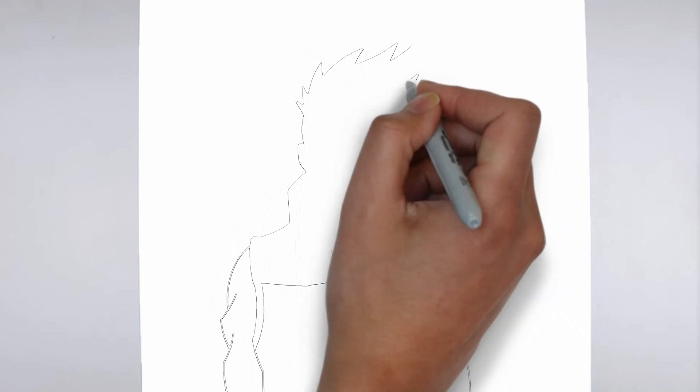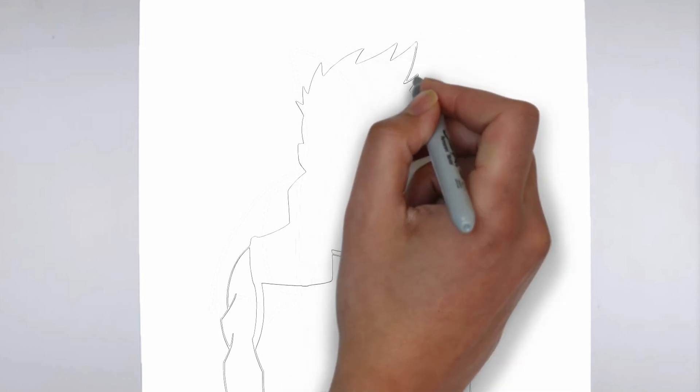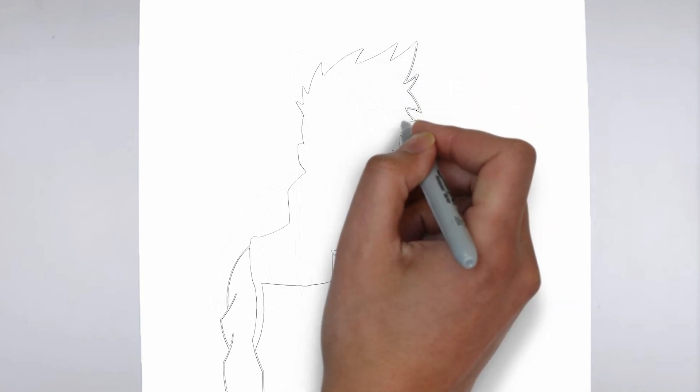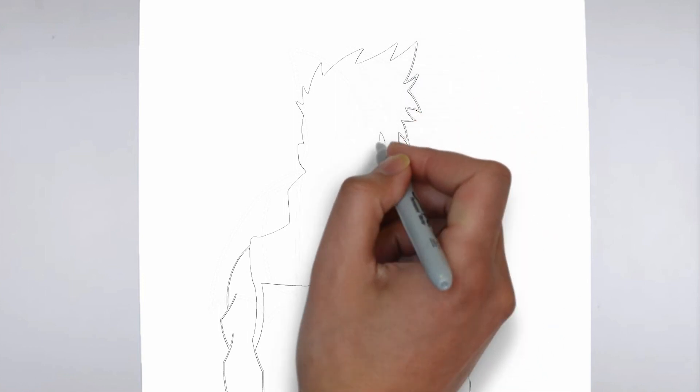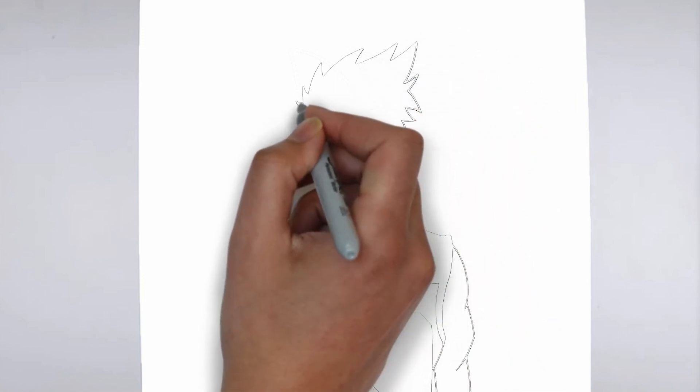Step 3: Shadows and light. To make your drawing more three-dimensional, add shadows and light.